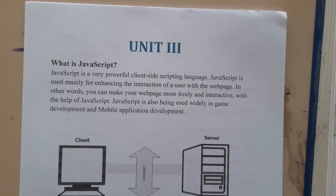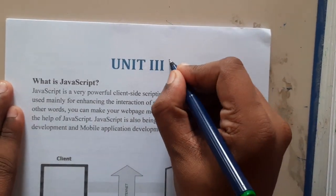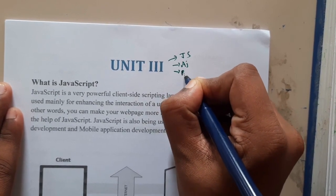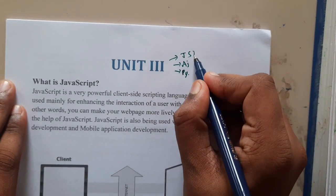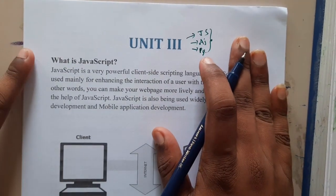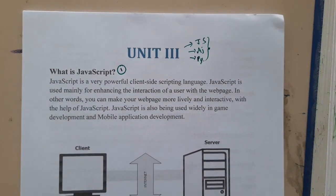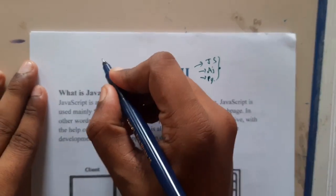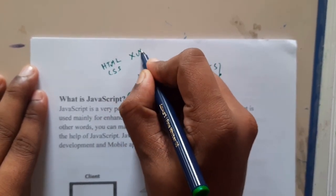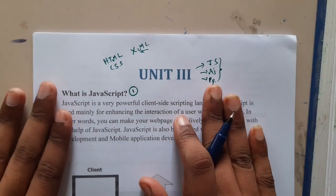Hello guys, we are back with our next lecture in this series. We are going to start the third unit of web programming. In this unit we will be discussing about JavaScript, AJAX, and also Python. It will be around 20 to 30 lectures.